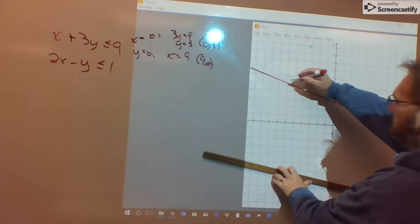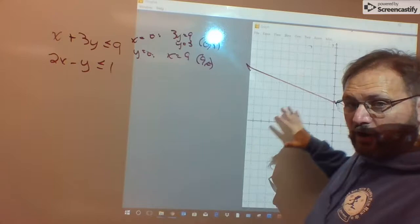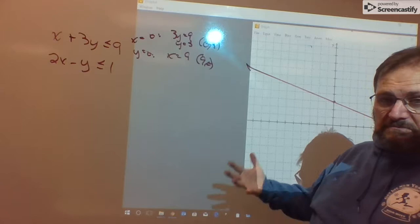And then I need to test the point because I need to know do I shade below and to the left of the line or above and to the right of the line. Origin works. Let's try it.